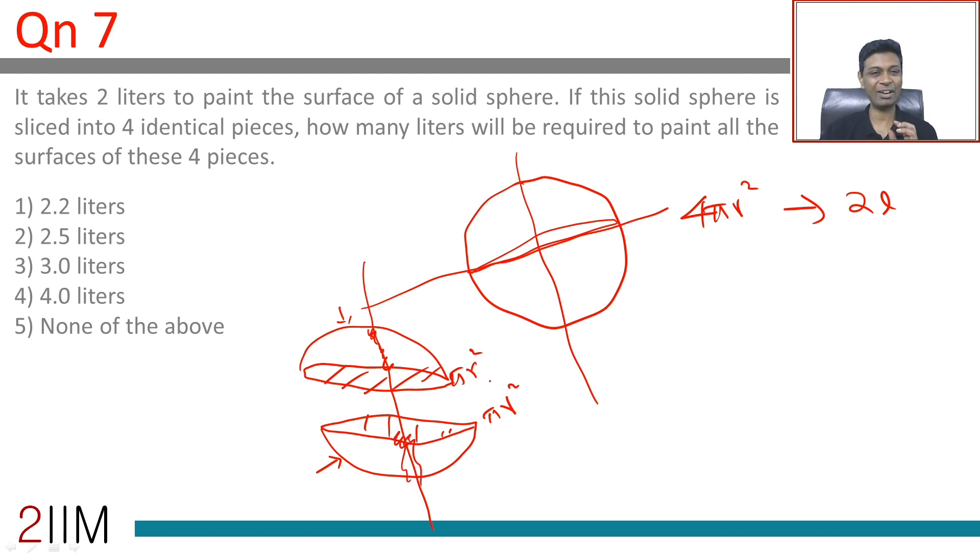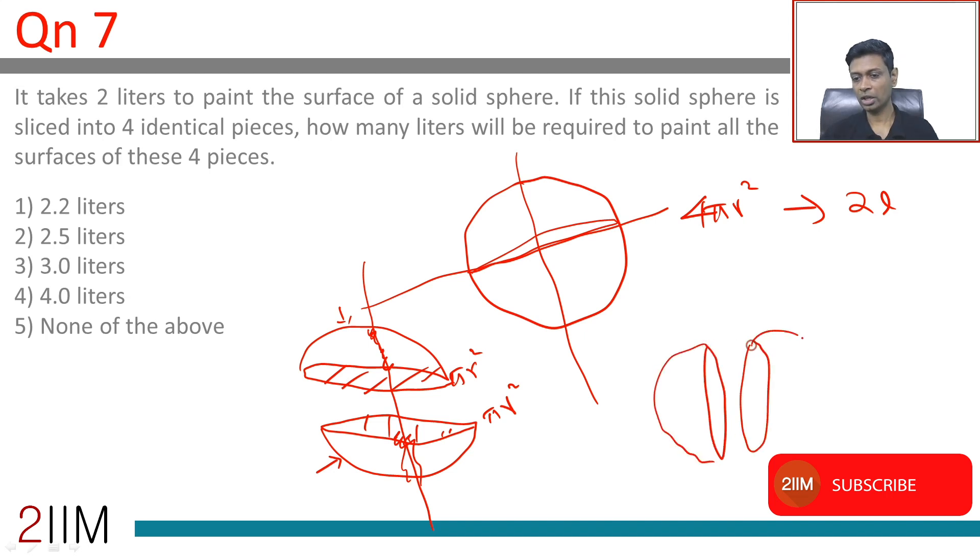And then this and this - you're slicing a hemisphere and then cutting it off like that. So these two surfaces get added, again πr² plus πr².